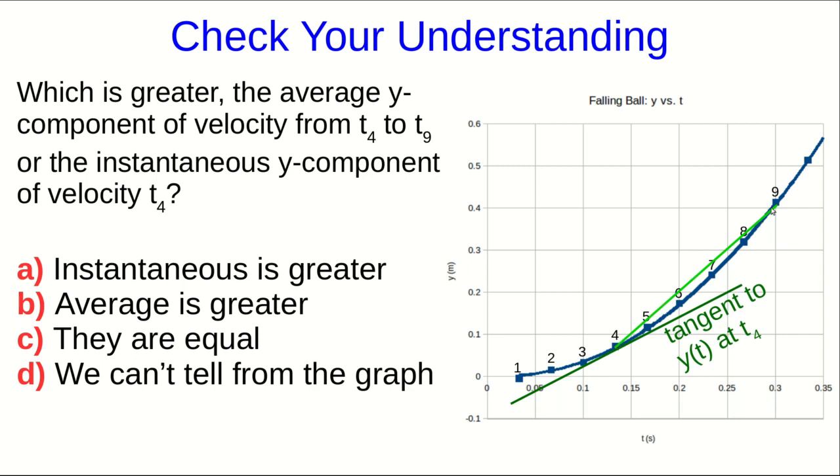This light green line that directly connects the point at t4 to the point at t9 is what we would use to get an average y component of the velocity. We just take the slope of this line, that's the straight rise over run from this point to this point.